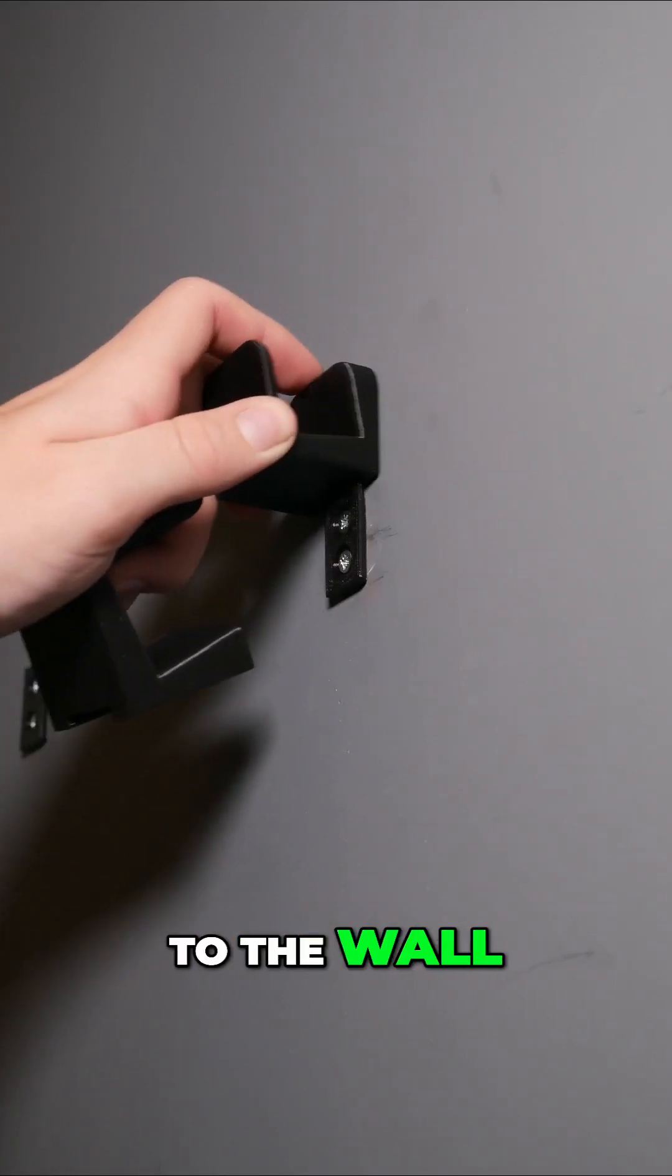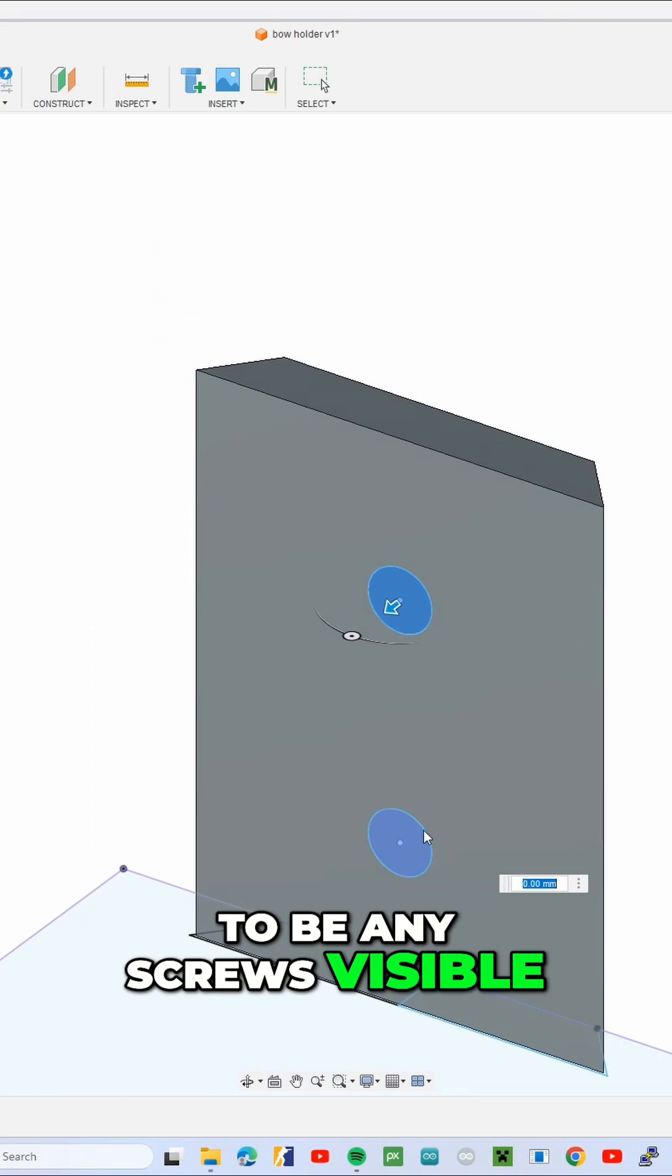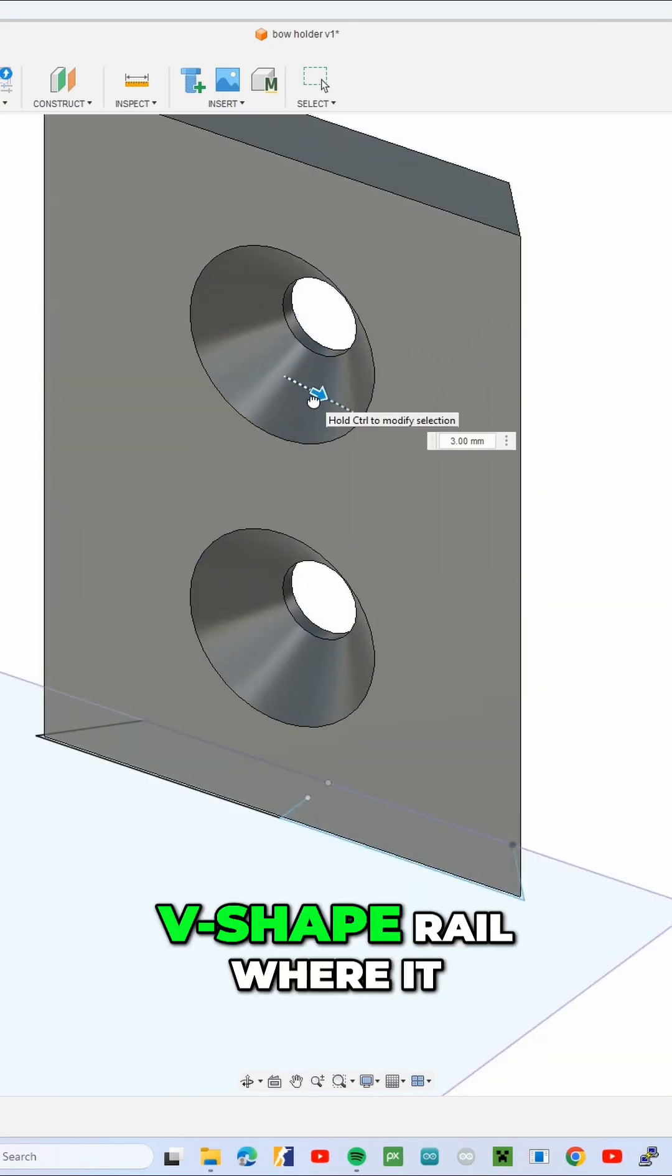Now I need a way to mount it to the wall but I don't want any screws visible. So I make this sphere shape rail where it can slide in.